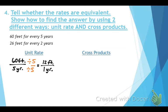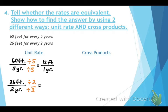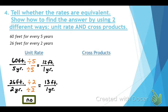Now do the same for 26 feet per two years. Divide both by two to get 13 feet per one year. Comparing: 12 feet per year versus 13 feet per year — those are different, so the answer is no, they are not equivalent.